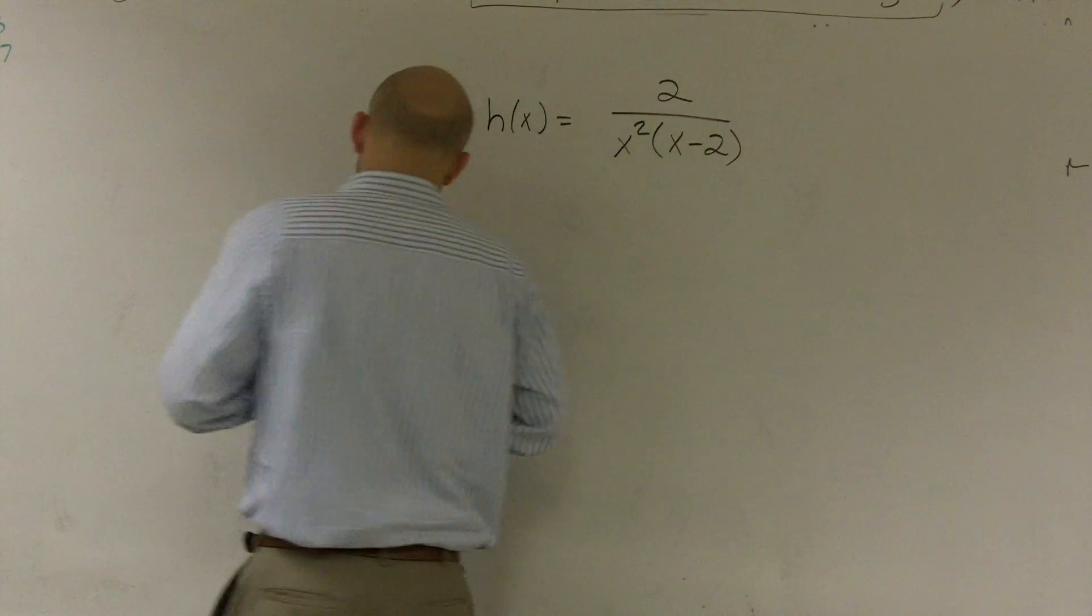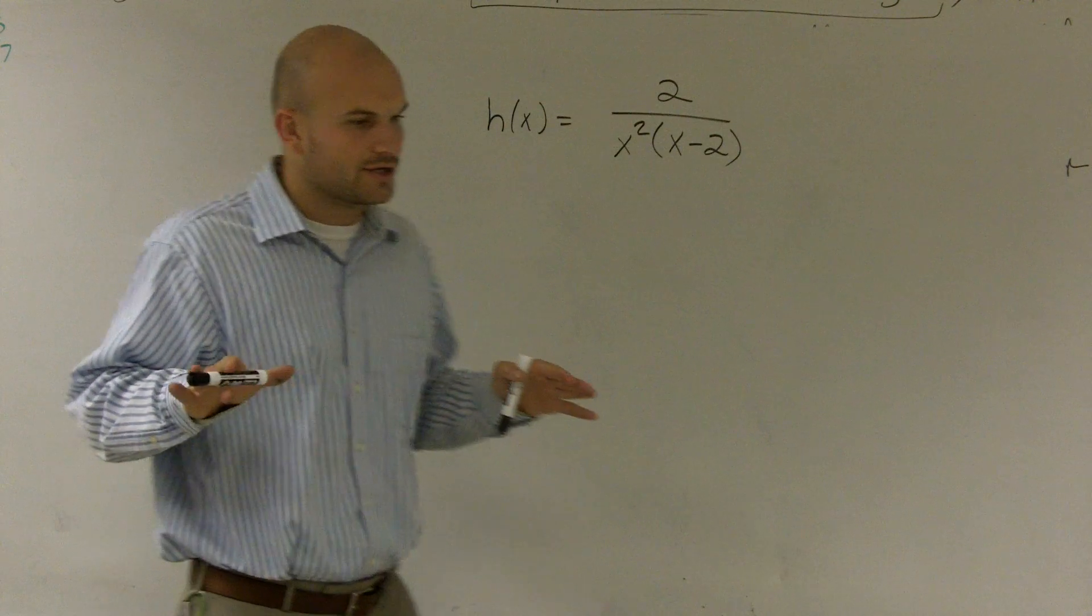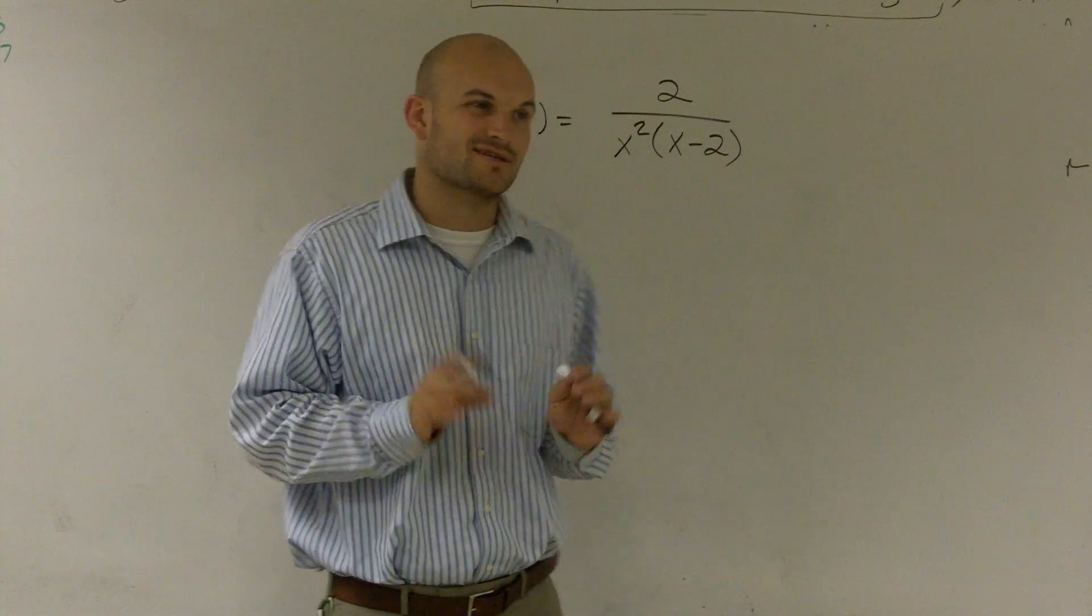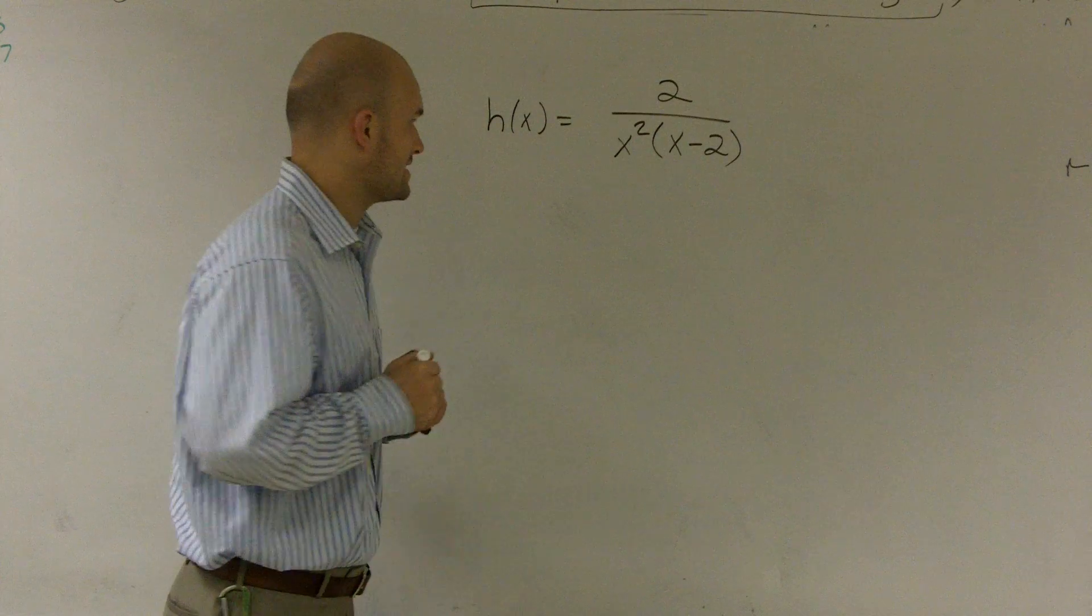And when you think of a vertical asymptote, it's going to be something that your graph is going to approach, but it's never going to touch or cross. That's for vertical asymptotes.